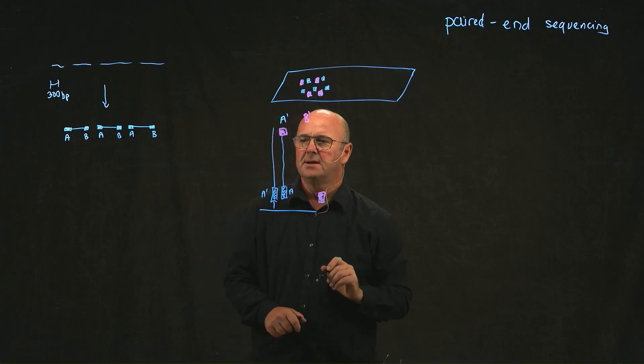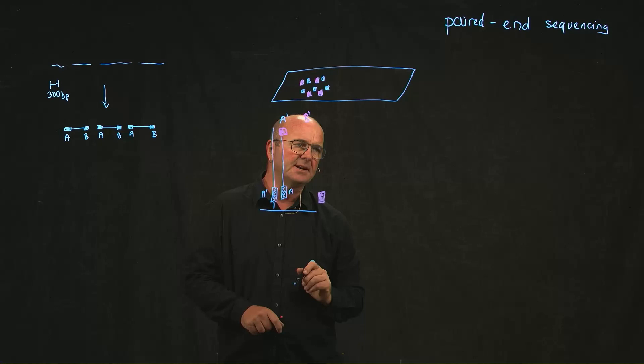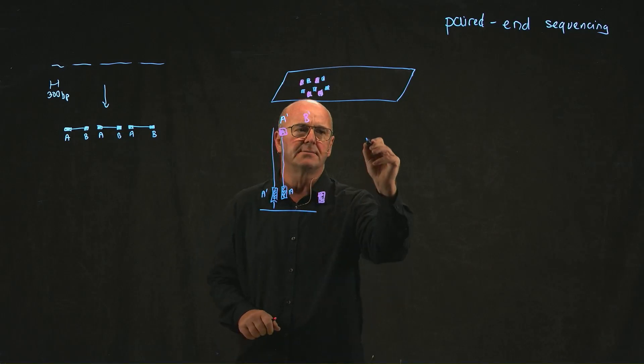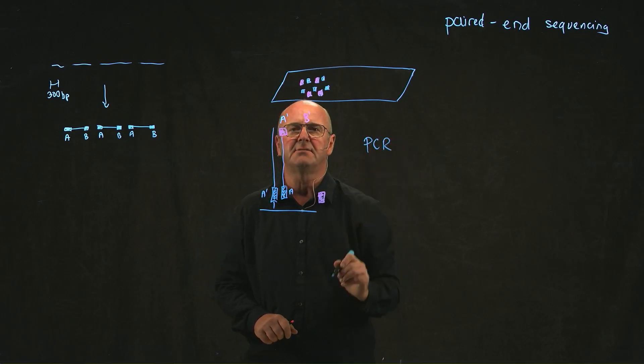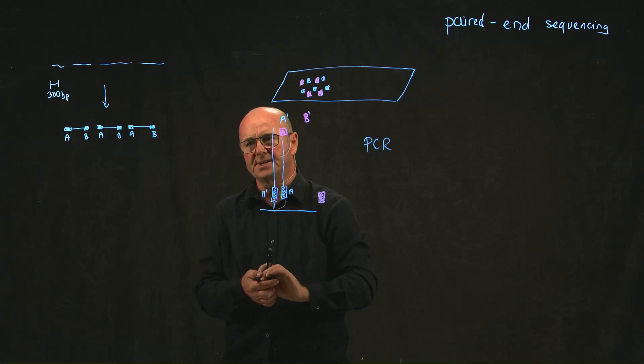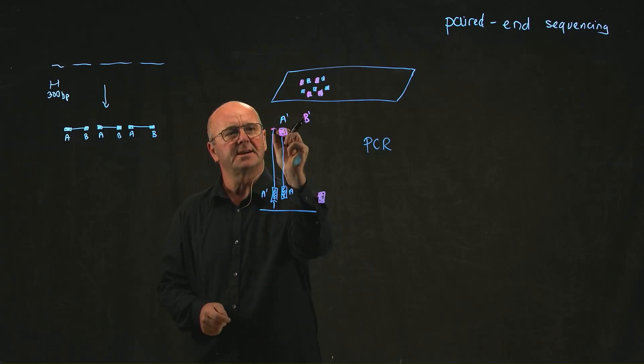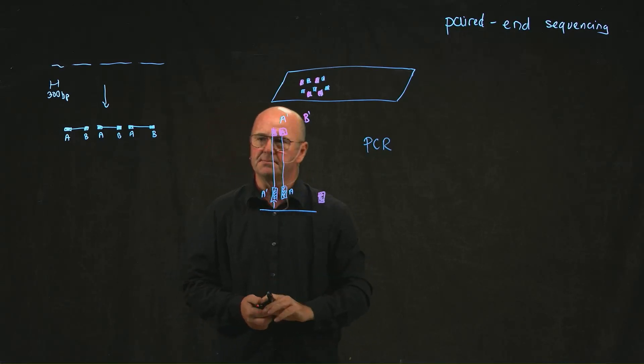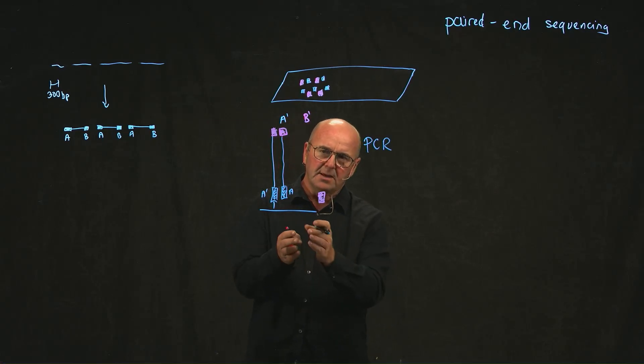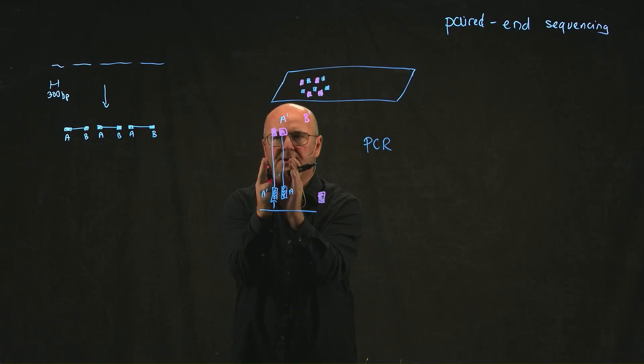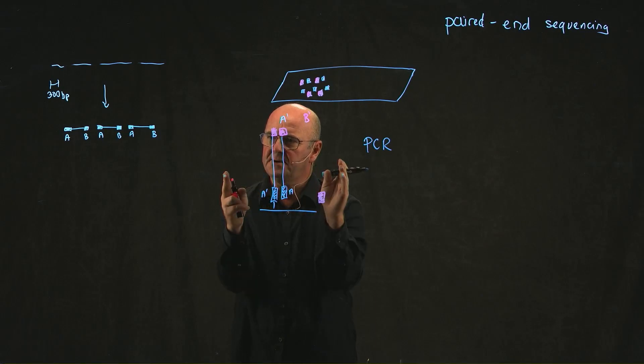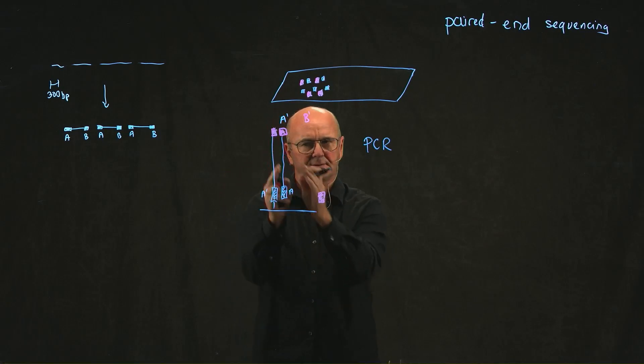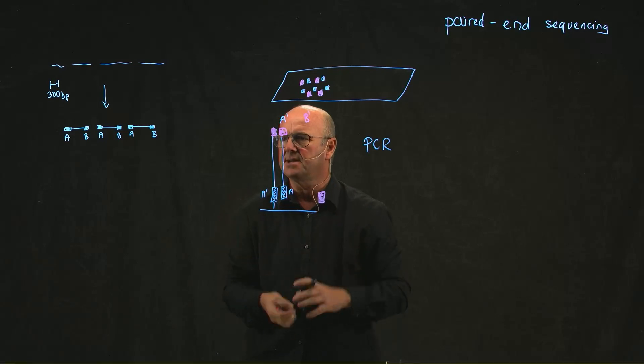And over here we have a sequence that's complementary to B. We can now do a PCR reaction where we make a copy of the DNA. So using what's called PCR, polymerase chain reaction, we just make a copy of the DNA. And of course that makes a copy of this B region. With DNA, because it's double-stranded, you can just heat the DNA up and that forces the strands to separate.